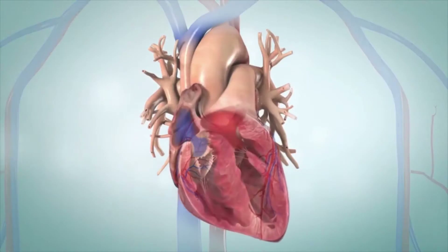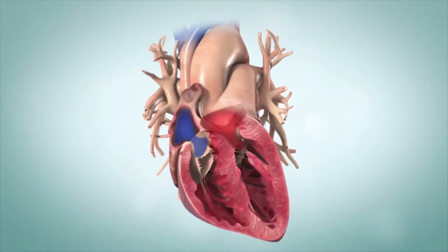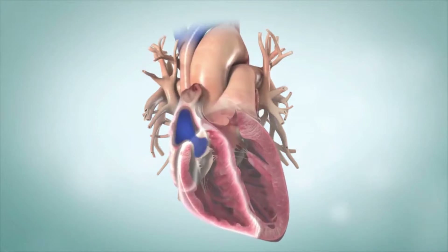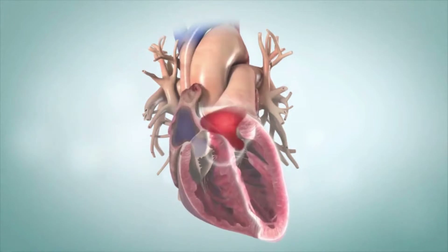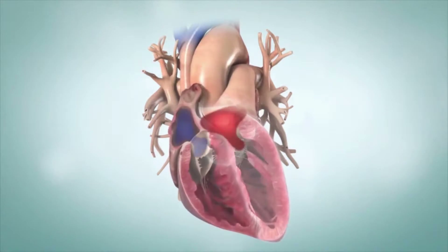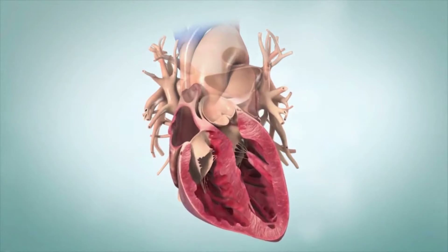Your heart is like two pumps that work side by side to move blood around your body. The right side of your heart pumps blood to your lungs to receive oxygen. The left side sends the oxygen-filled blood out to your body.